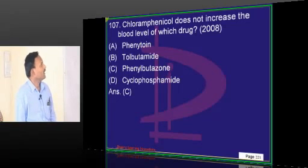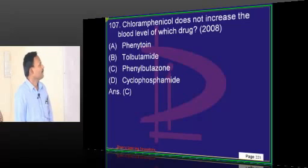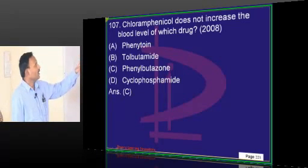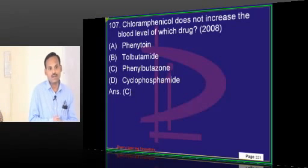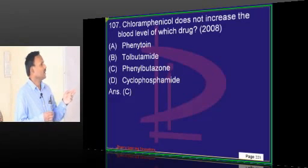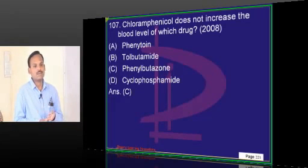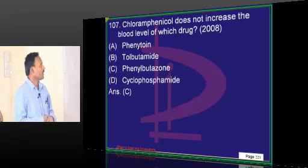Chloramphenicol does not increase the blood level of which drug? Considering phenytoin, tolbutamide, phenylbutazone, cyclophosphamide — chloramphenicol has a dual mechanism of action: it is an inhibitor of enzymes in the liver and can also displace some drugs from plasma protein binding. But that interaction — either metabolism or displacement — is seen with all except phenylbutazone. So phenylbutazone levels are not affected by chloramphenicol.